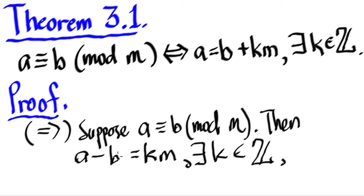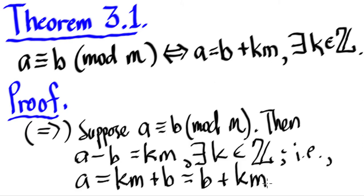What we will do is transpose the B to the other side. That is, it's going to give us A is equal to, by transposition, KM plus B. And then, by commutative property of addition, B plus KM.